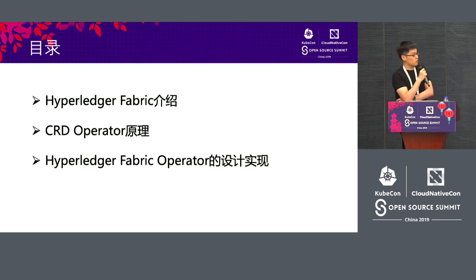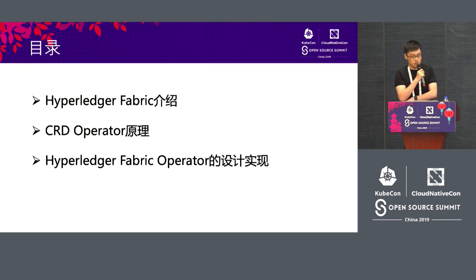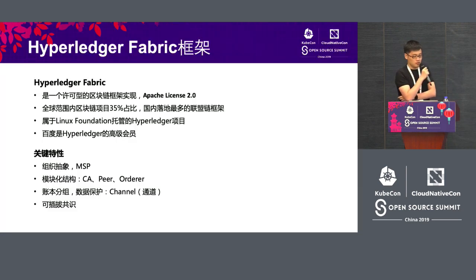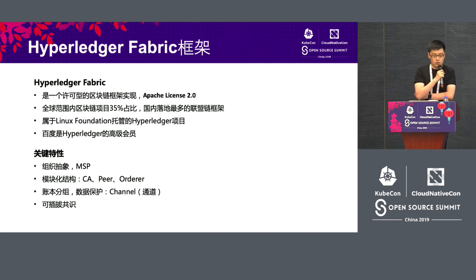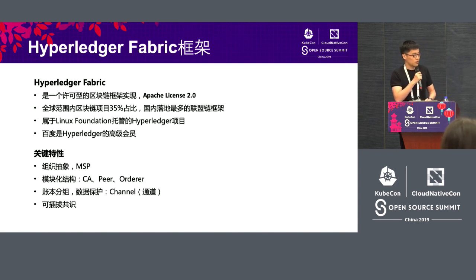Today I'm sharing about Fabric Operator, so I need to give you some background about what is Fabric, what is the operator, and ultimately we'll be talking about achieving Fabric Operator through our design. We'll also see the design and implementation of Fabric Operator. First, let's see what is Hyperledger Fabric. I think Fabric is the most popular blockchain architecture — it's also the number one permissioned blockchain and is a subproject of Hyperledger. Baidu is also a senior member of that.